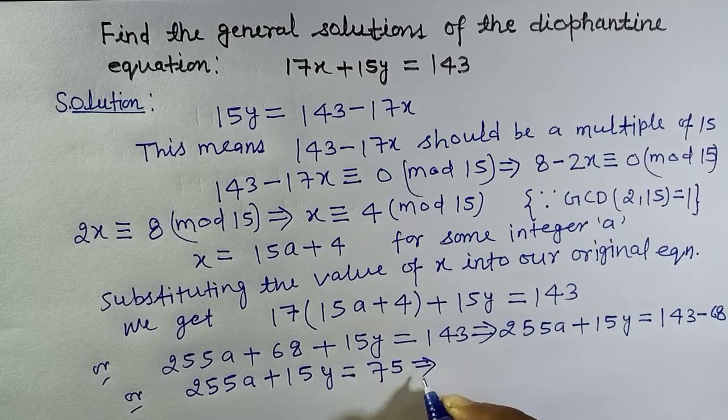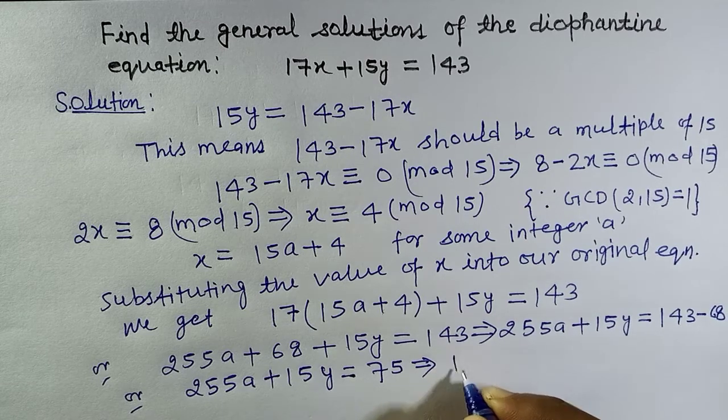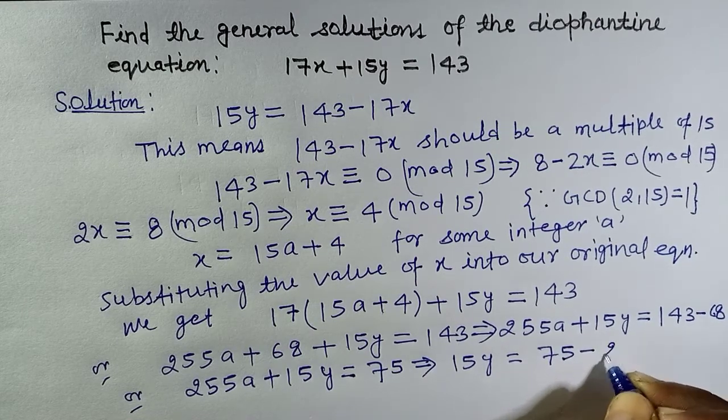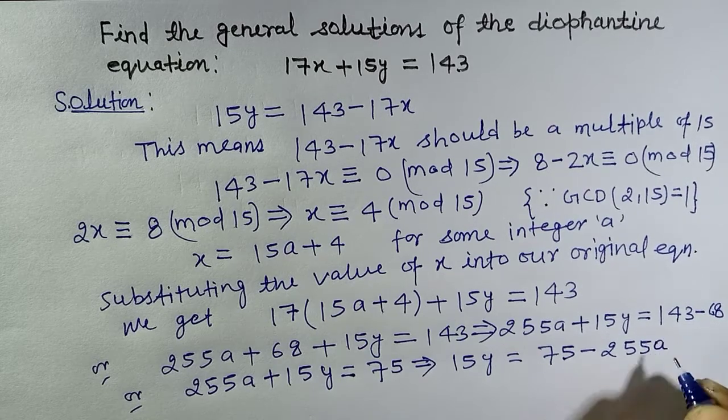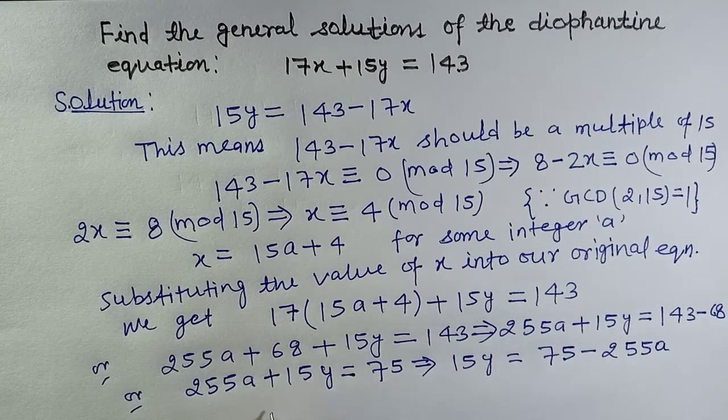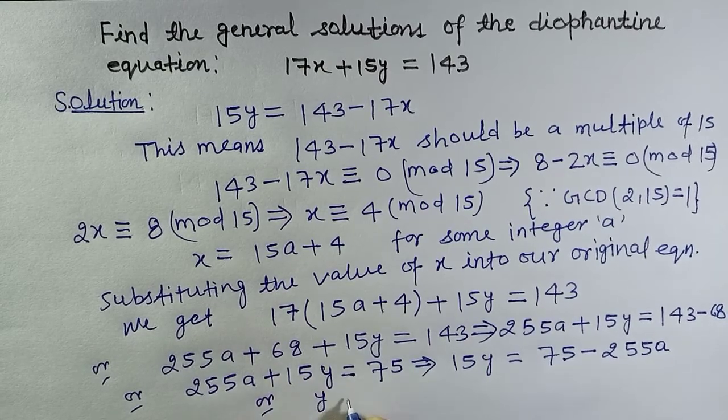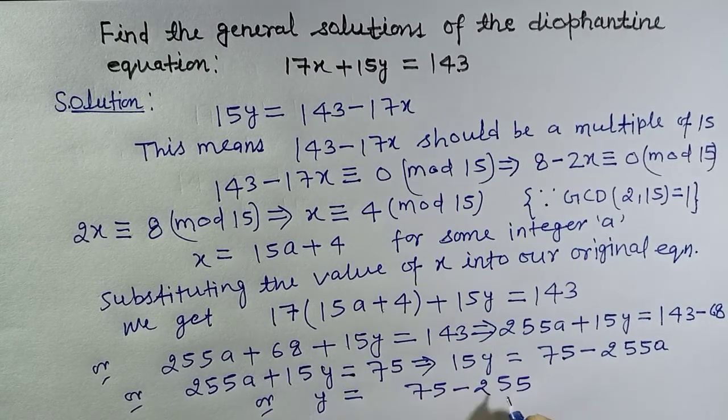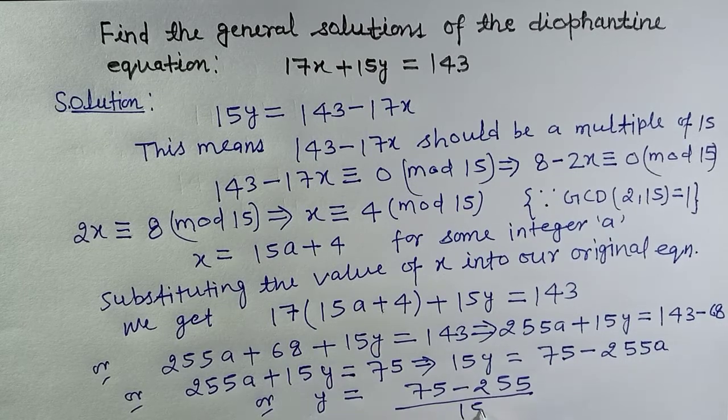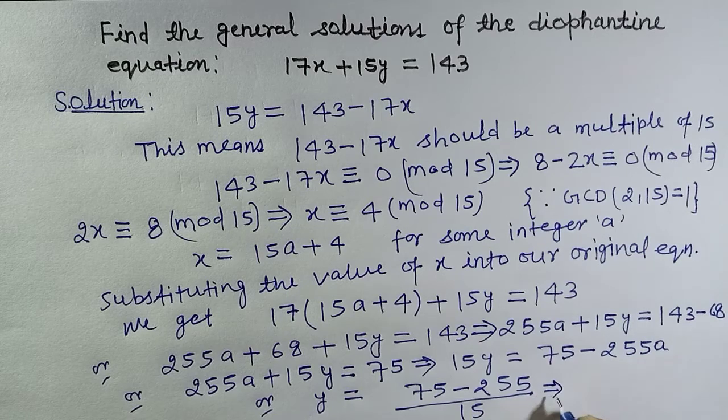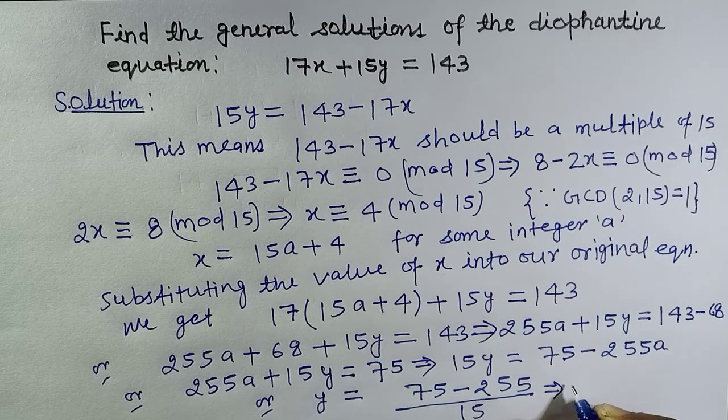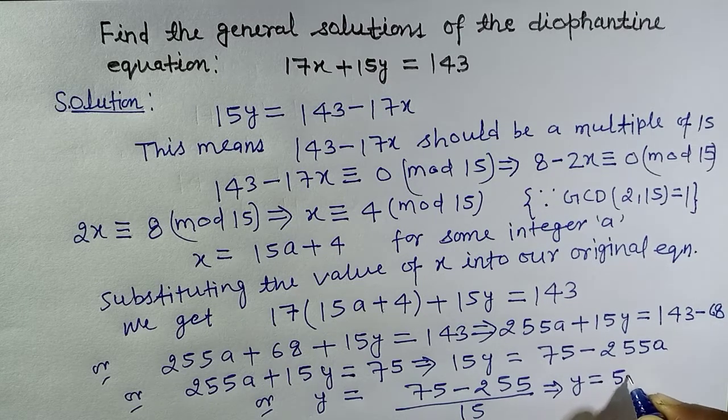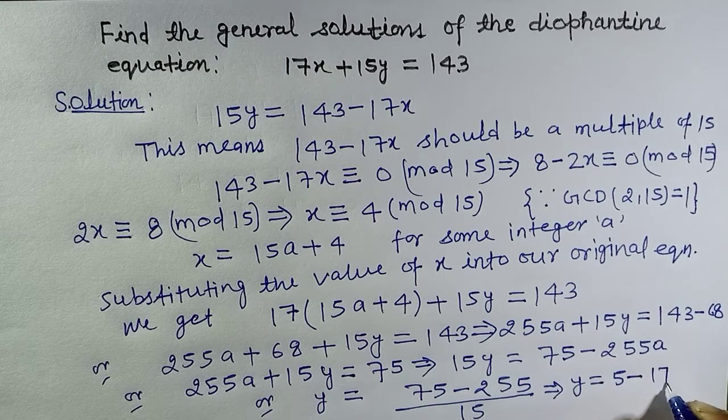Or 255a plus 15y equals 75. This implies 15y equals 75 minus 255a, or y equals 75 minus 255a divided by 15. So y equals 5 minus 17a.